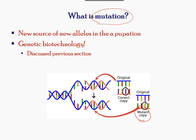The overuse of antibiotics has resulted in many such bacterial species. When mutations are carried out artificially, it is considered to be an example of biotechnology. When a mutation results in the survival and reproduction of an organism, it is called an adaptation.